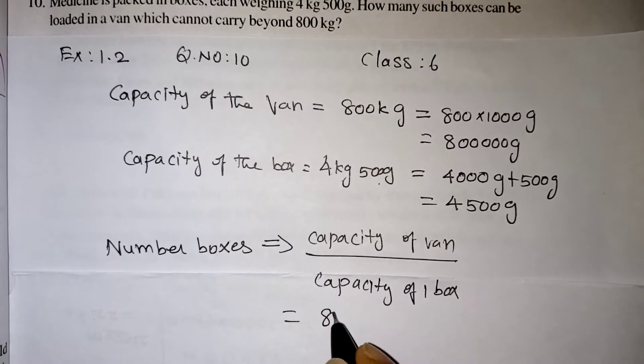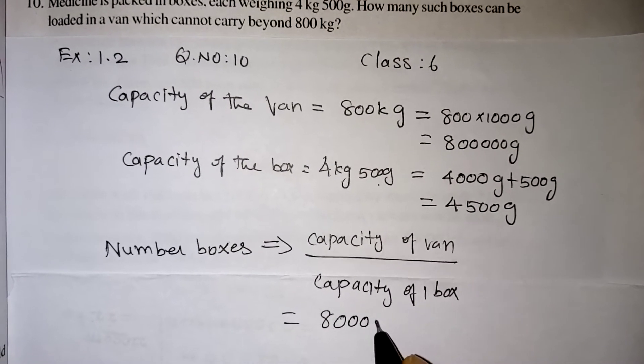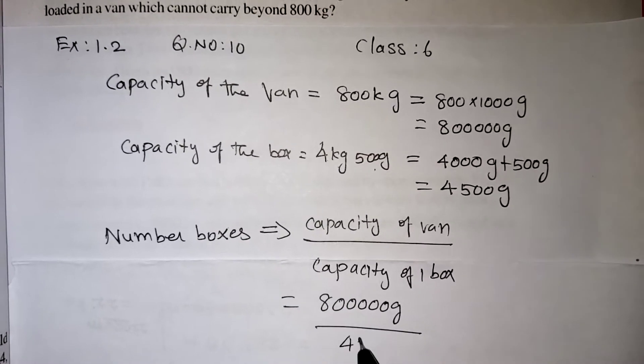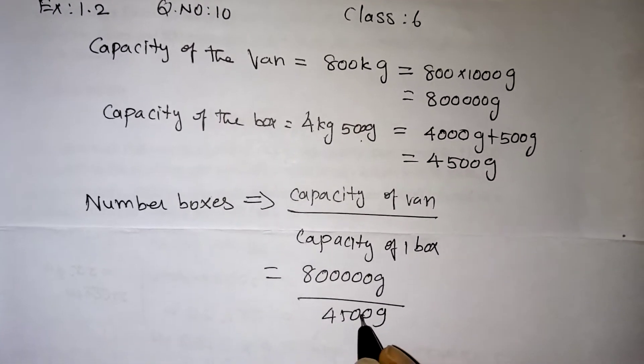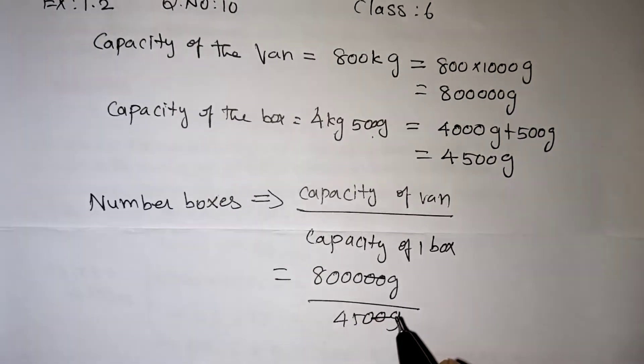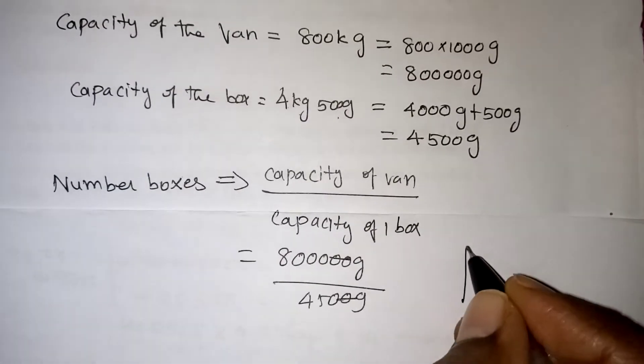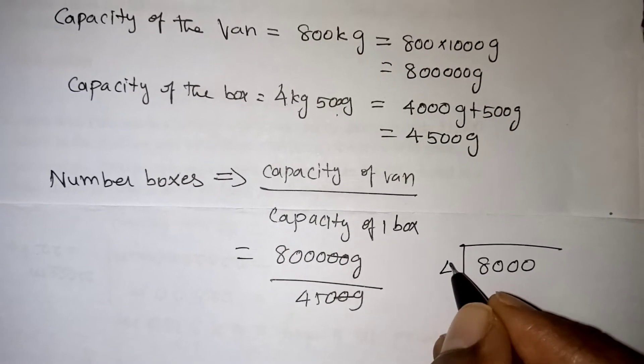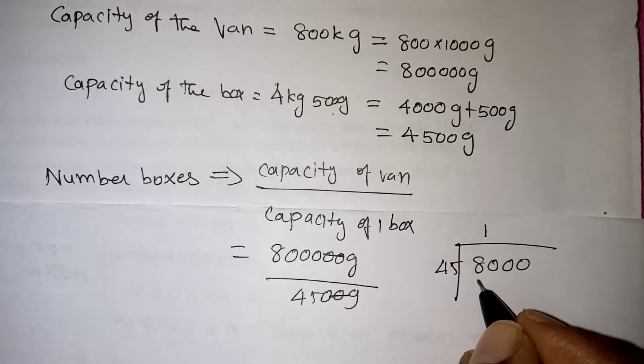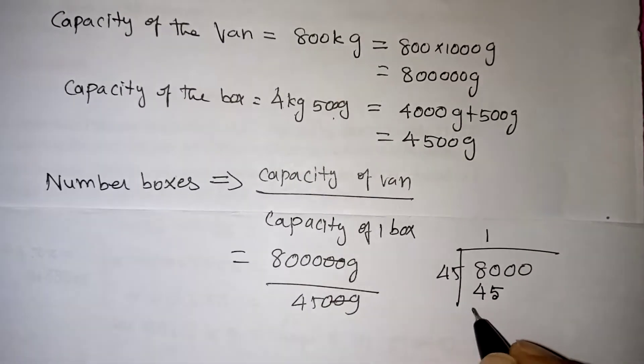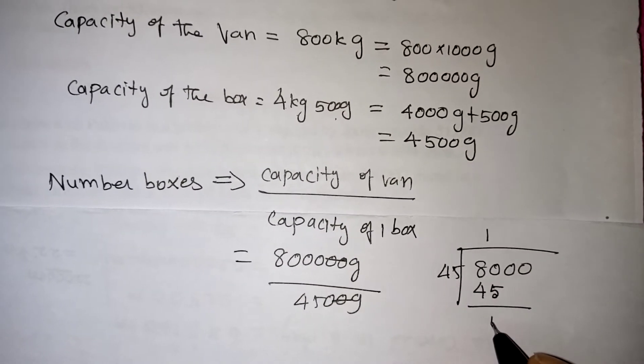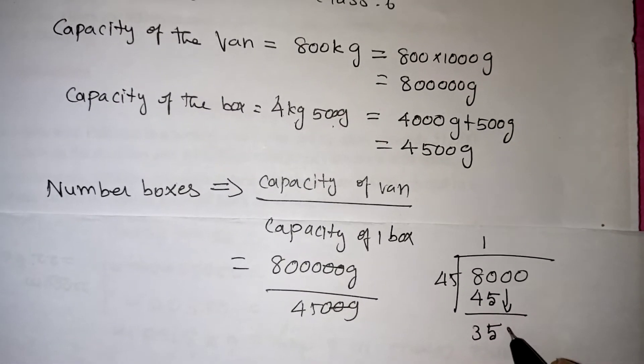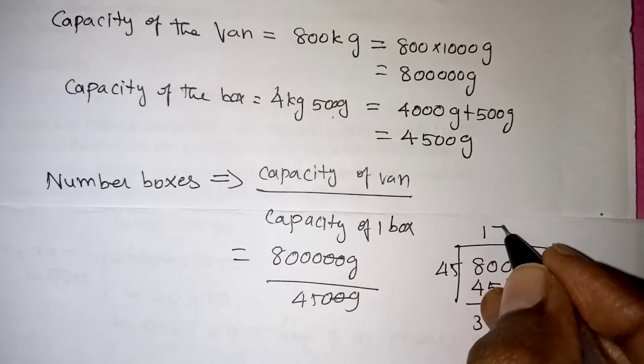So 800,000 grams by 4500 grams. Two zeros and two zeros we can cancel. Then remaining we have to do normal division. 8000 divided by 45. 45 ones are 45, we can take. Subtraction gives us 350.